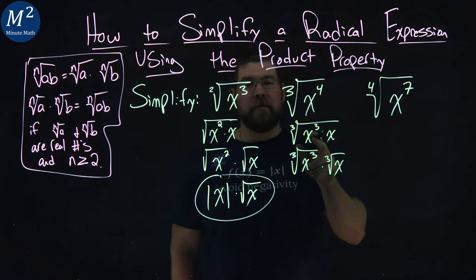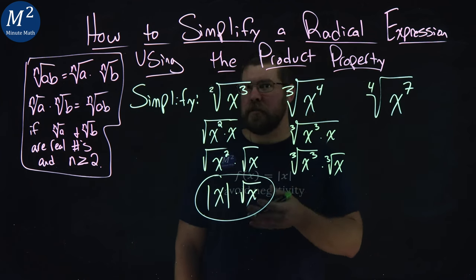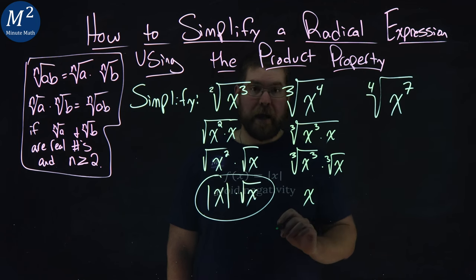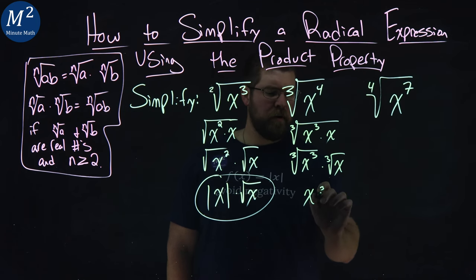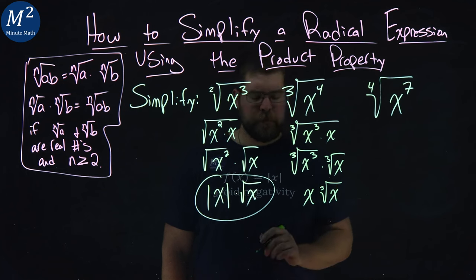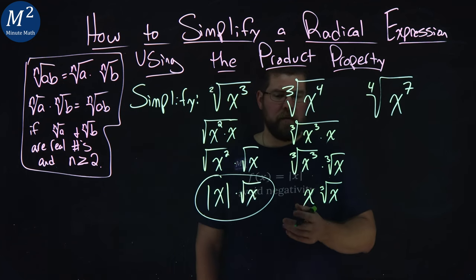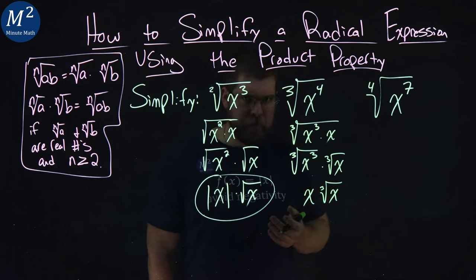Third root of x to the third power is a perfect cube kind of setup here. And so that just becomes an x times the third root of x. Now, you might be wondering, what about the absolute value? We don't need that here.